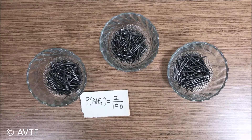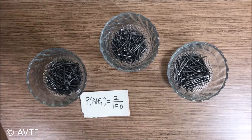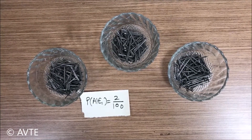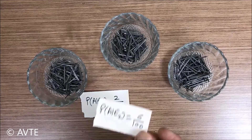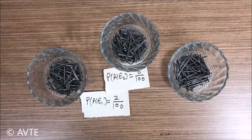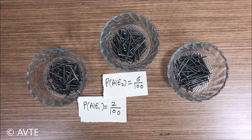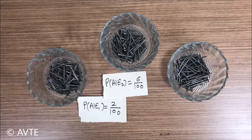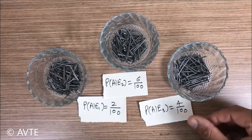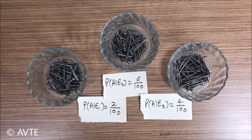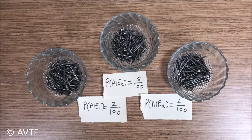The question says that 6% of the nails are defective when produced by the second factory, so P(A|E2) = 6/100 — it is necessary to have E2 before we can find the probability of a defective nail. Then the question says 4% are defective when produced by the third factory, giving P(A|E3) = 4/100. Their sum is not one, which is expected because these are conditional probabilities depending only on E1, E2, and E3 respectively.